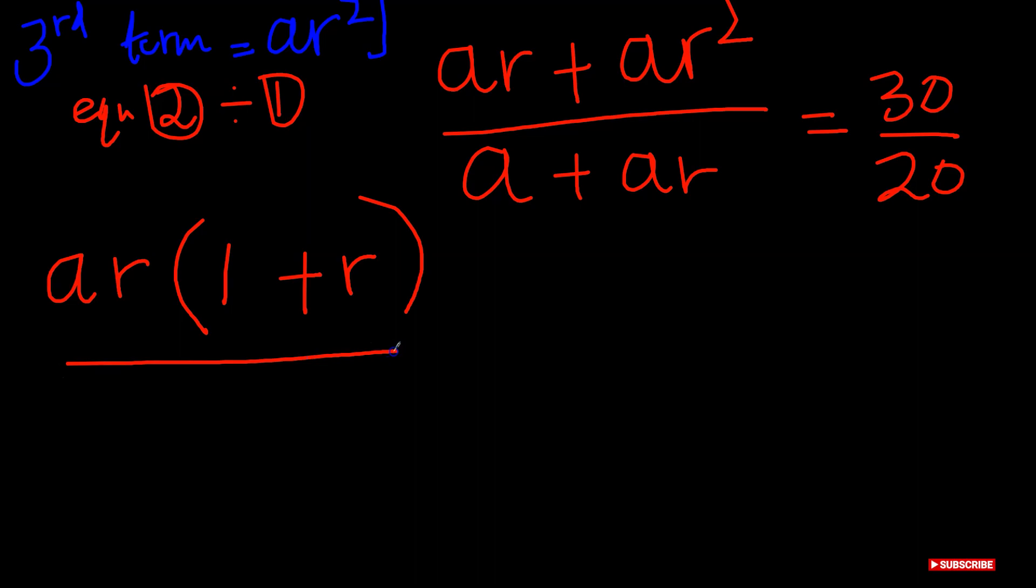And then for the denominator, I have a as a common factor. So that's a times 1 plus r. On this side we have 30 over 20, which is 3 over 2.